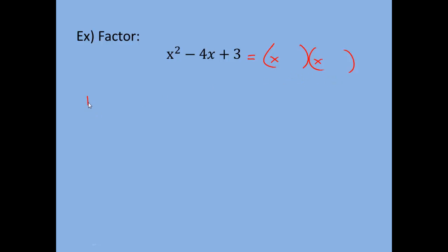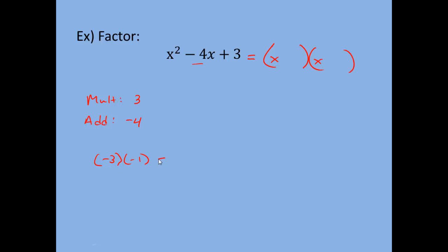We need numbers that multiply to c, the last term, which is positive 3, and also add to the middle coefficient, which is negative 4. Since the last term is positive, the signs of the two numbers must be the same — either both positive or both negative. Since they have to add to negative 4, they must both be negative. Negative 3 and negative 1 work: negative 3 times negative 1 equals positive 3, and negative 3 plus negative 1 equals negative 4. So we fill in the blanks: x minus 3 times x minus 1.